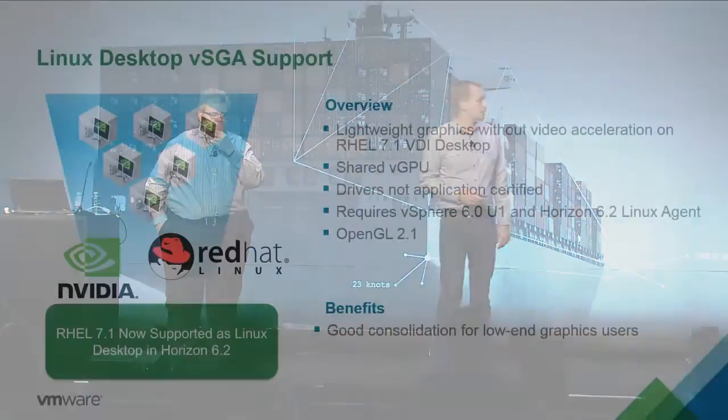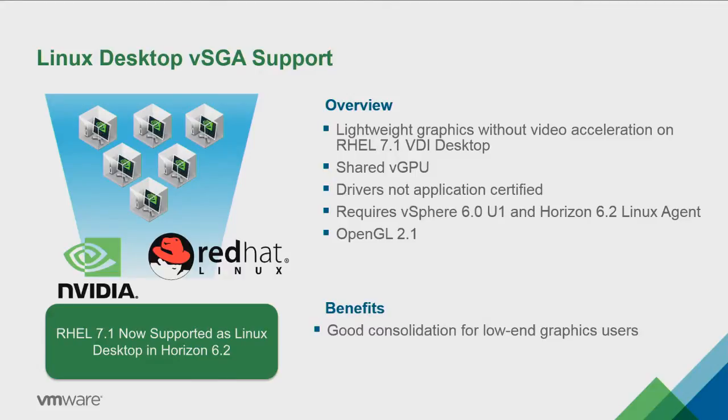VSGA is now supported with Linux — specifically Red Hat Enterprise Linux 7.1 only, primarily due to testing efforts. It says 'shared VGPU' on the slide but it should say VSGA. OpenGL is available — if you're using Linux 3D applications like Katia, OpenGL is running. NVIDIA Grid K1 and K2 are the supported cards for VSGA. The new Maxwell M60 — which has double the density with two GPU cores — supports VDGA. The MXM blade version is also available.